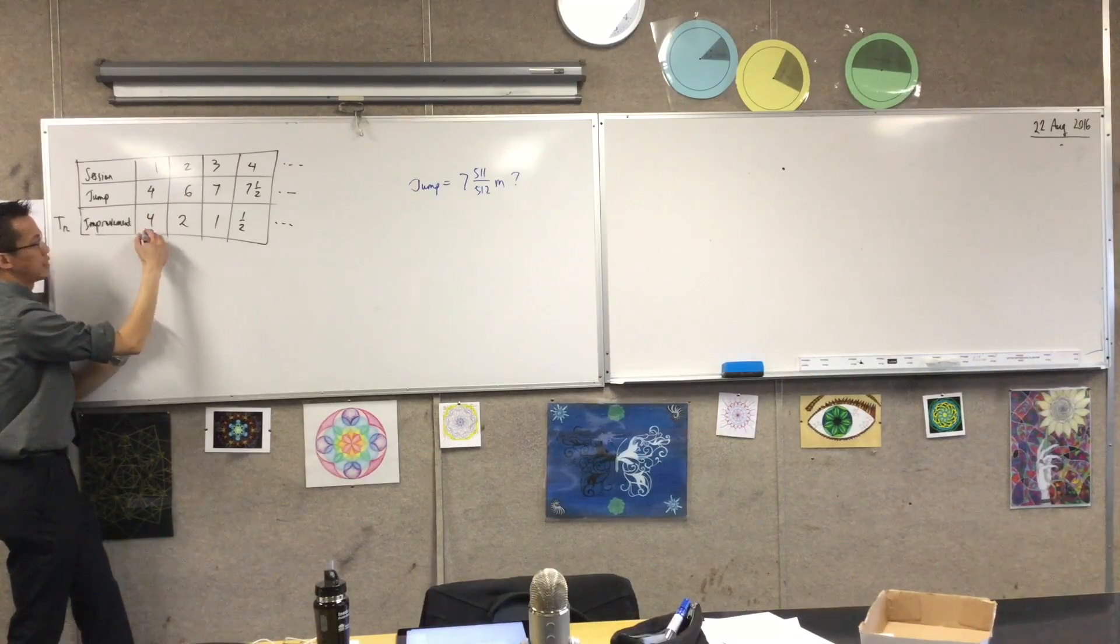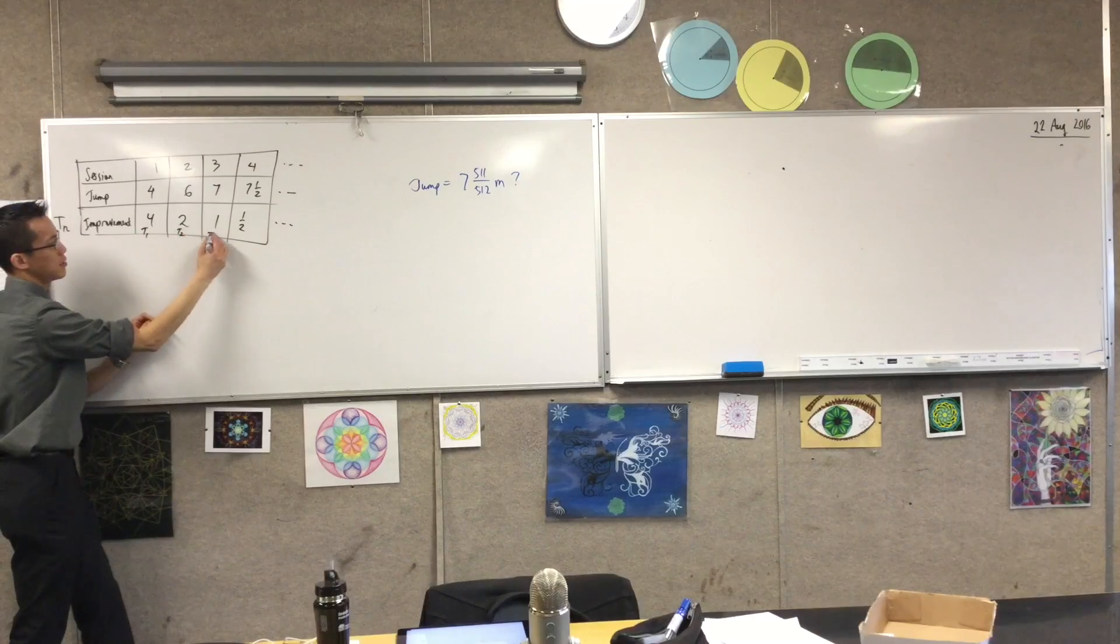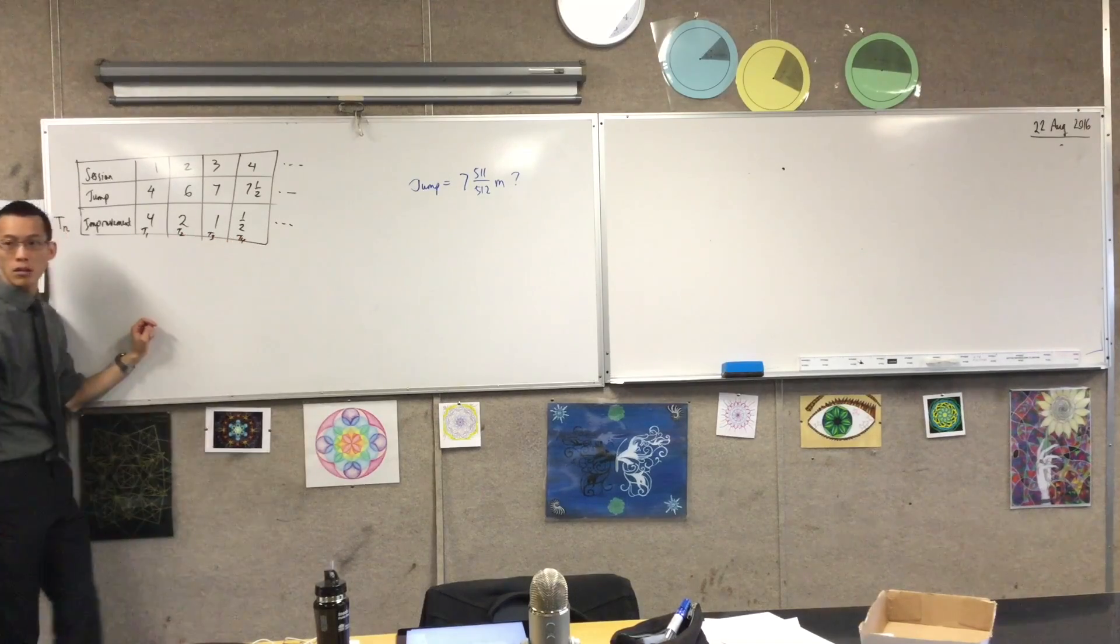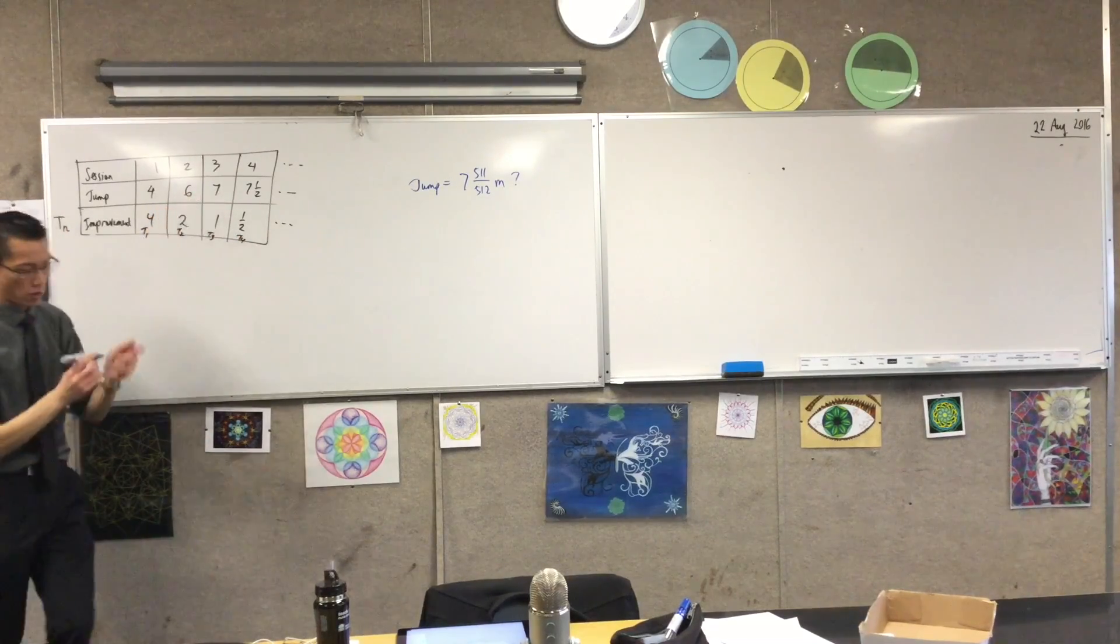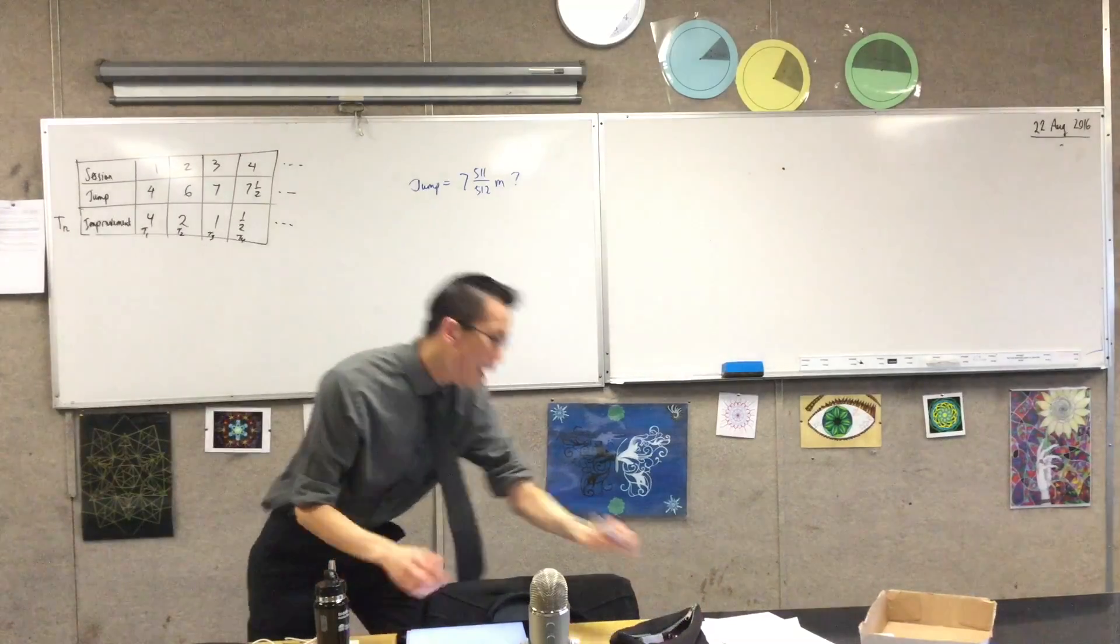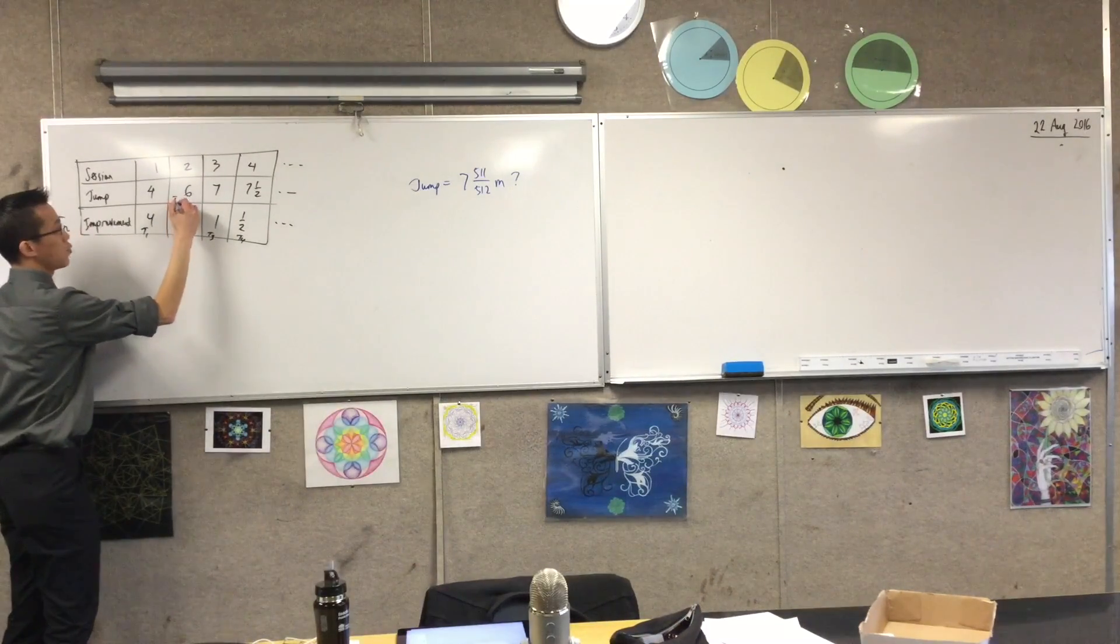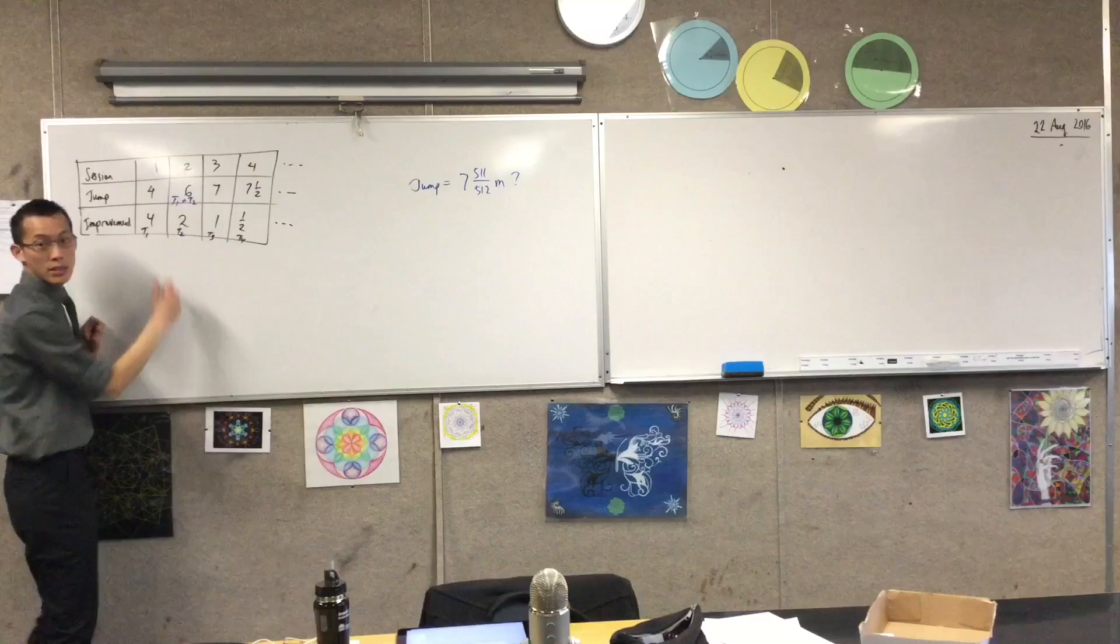To get to this, I have to add this and this. So I'm actually going to label these. I'm going to go T1, T2, T3, T4. So where does this 6 come from? Let's get my color. This is actually T1 plus T2. Do you see that? That's where the number comes from.